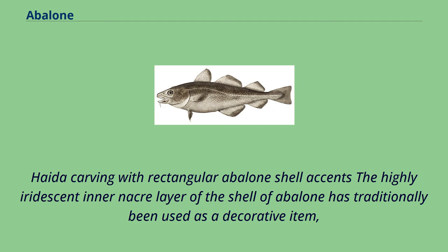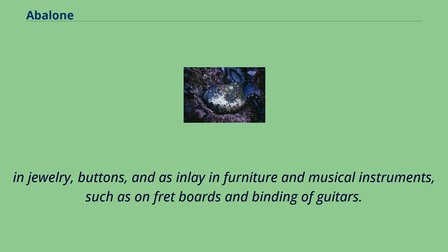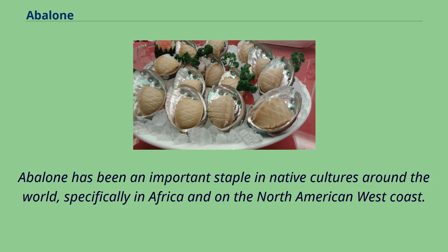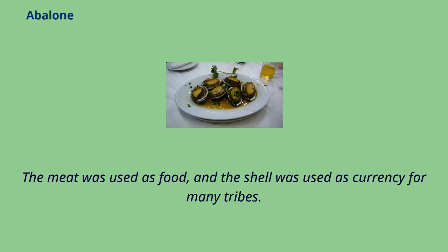The highly iridescent inner nacre layer of the shell of abalone has traditionally been used as a decorative item — in jewelry, buttons, and as inlay in furniture and musical instruments, such as on fretboards and binding of guitars. Abalone has been an important staple in native cultures around the world, specifically in Africa and on the North American West Coast. The meat was used as food, and the shell was used as currency for many tribes.